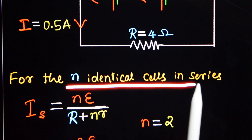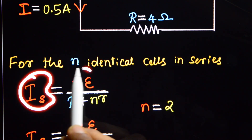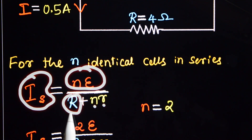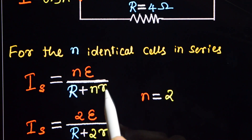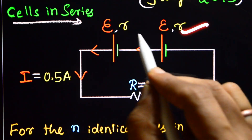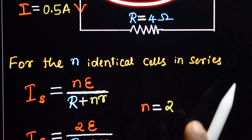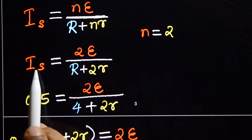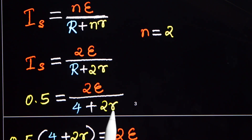For N identical cells in series, we have a formula: the current through the external resistance, I subscript S, is equal to N into E divided by capital R plus N into small r. Capital R is the resistance of the external resistor, and small r is the internal resistance of a cell. Here two cells are in series, therefore N is equal to 2. So I subscript S, that is 0.5, equals 2 into E divided by 4 plus 2 into small r.